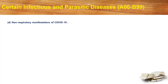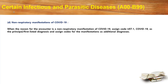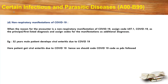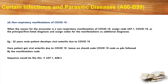Let's move into the non-respiratory manifestations of COVID-19. When the reason for the encounter is a non-respiratory manifestation of COVID-19, assign code U07.1 as primary diagnosis followed by additional codes for the manifestations. Example: a 32-year-old male patient develops viral enteritis due to COVID-19. Hence we should code COVID-19 as primary followed by the manifestation code. The sequence would be U07.1 and A08.4. U07.1 is COVID-19 and A08.4 is viral enteritis not otherwise specified.